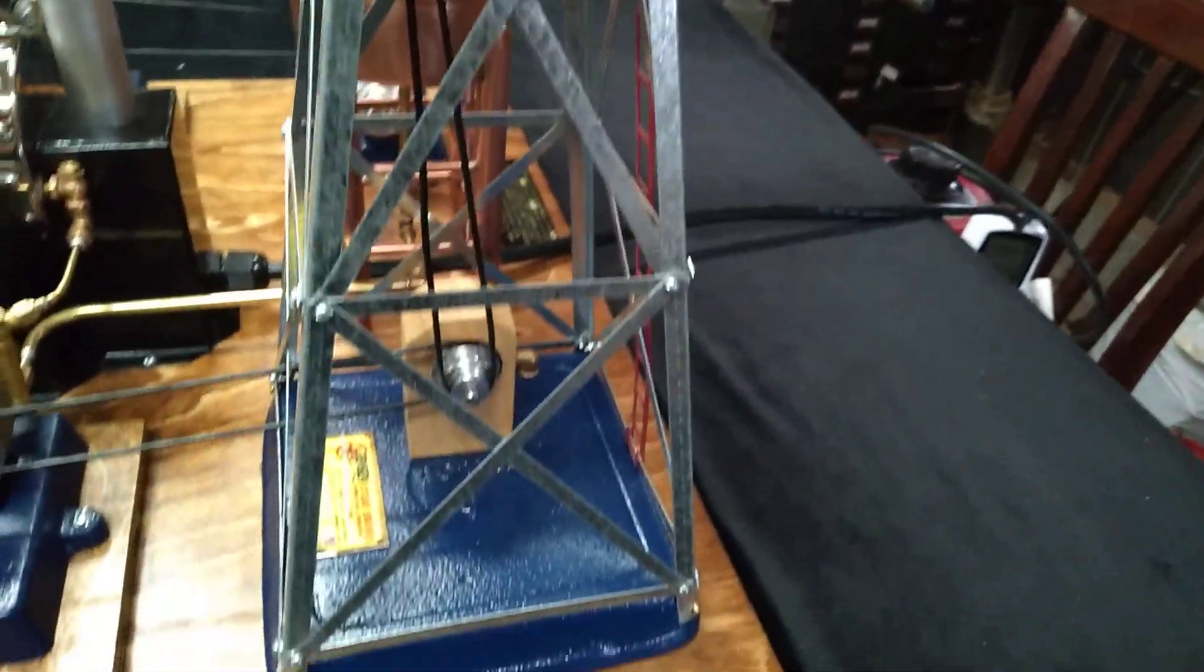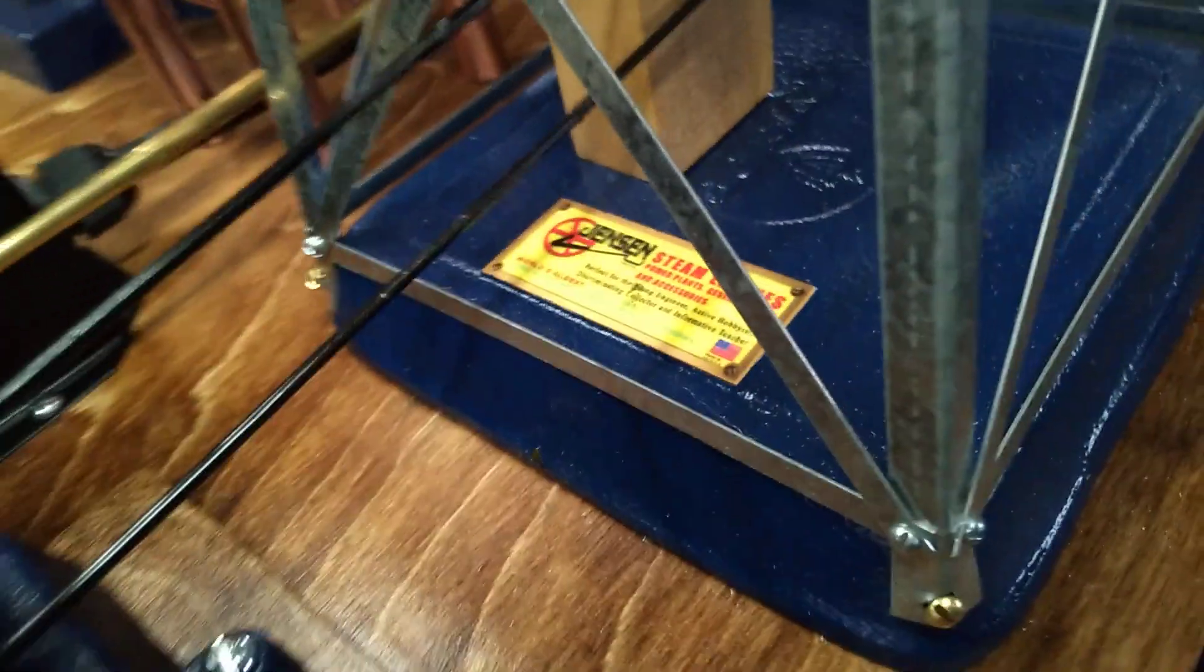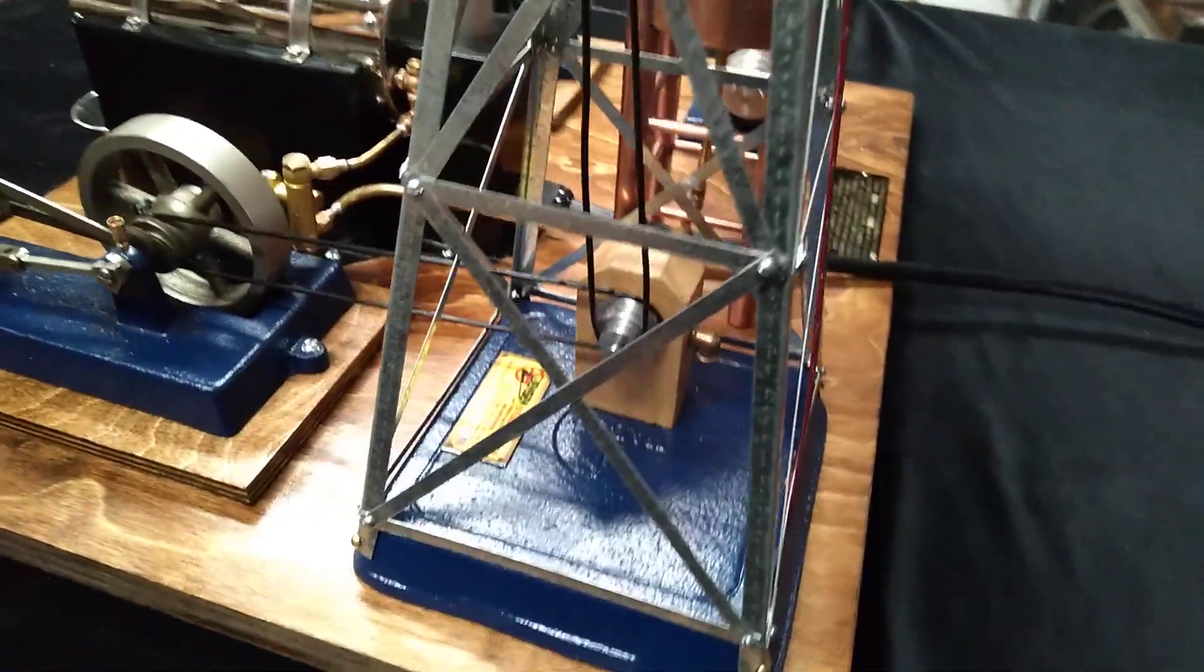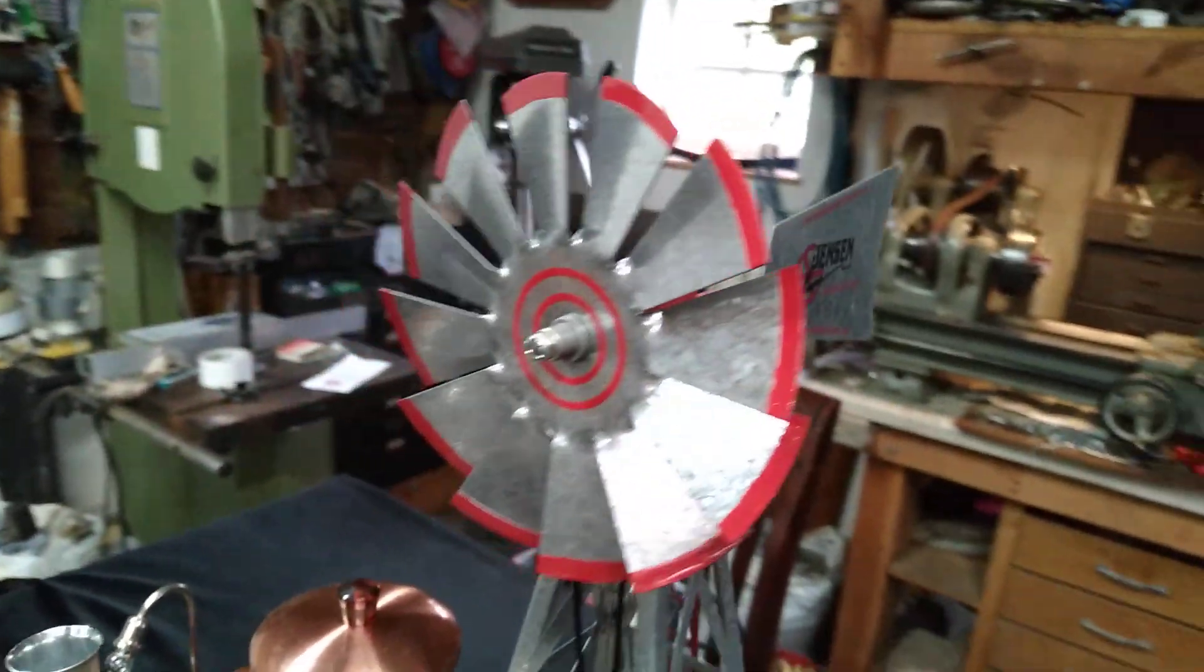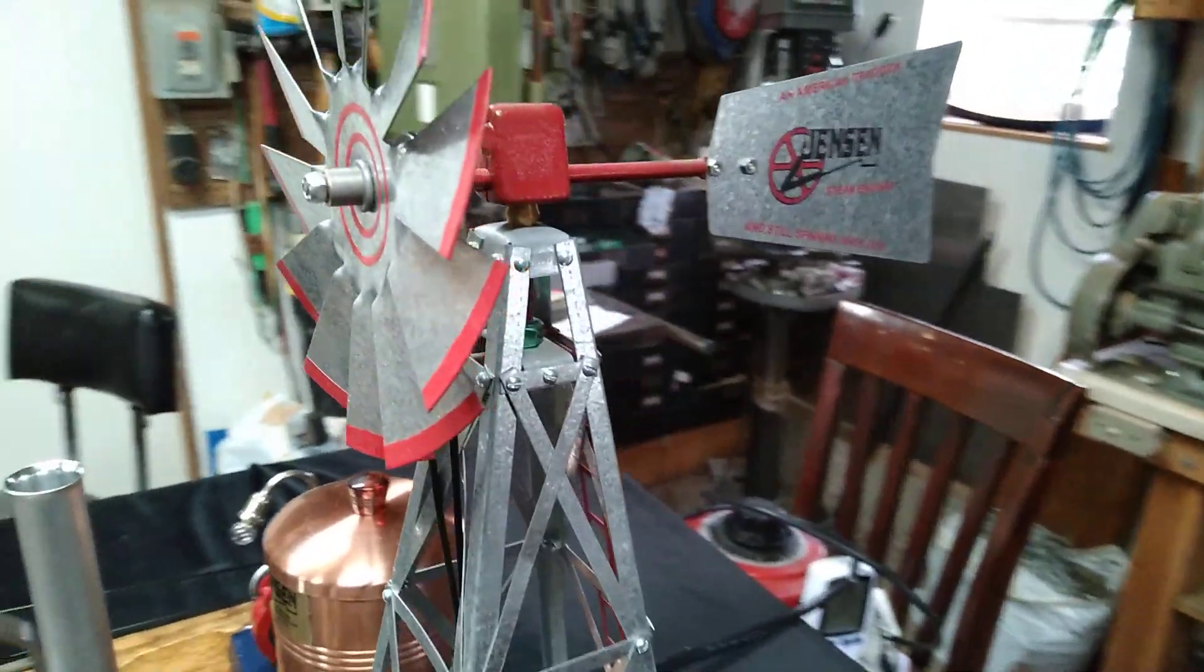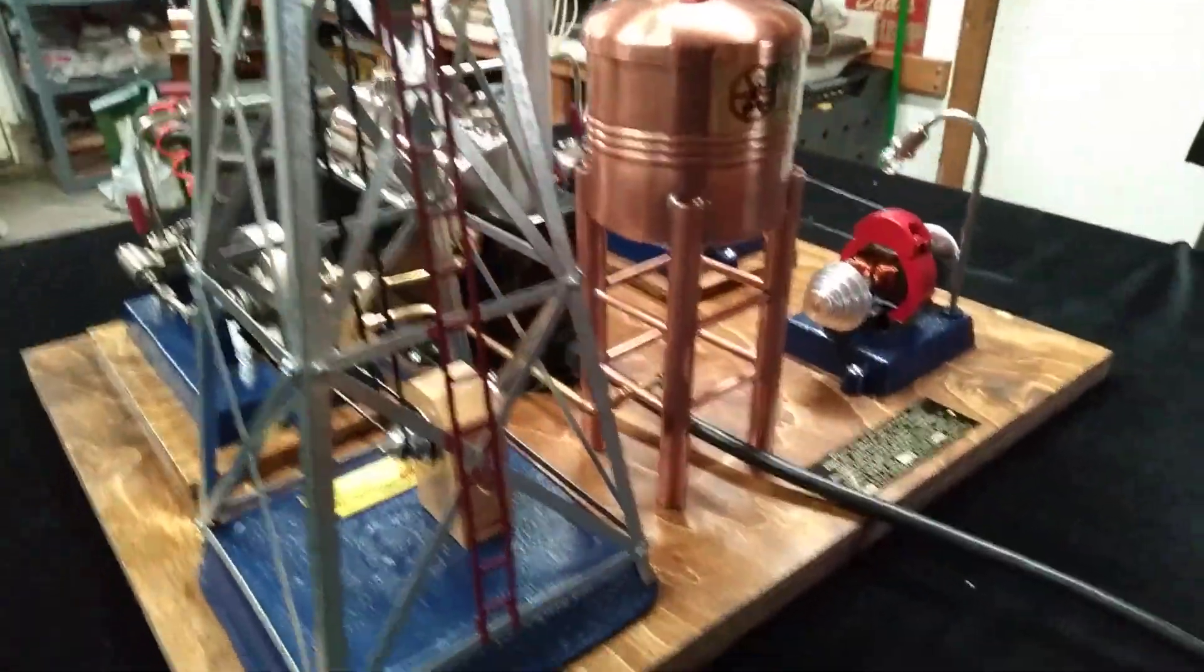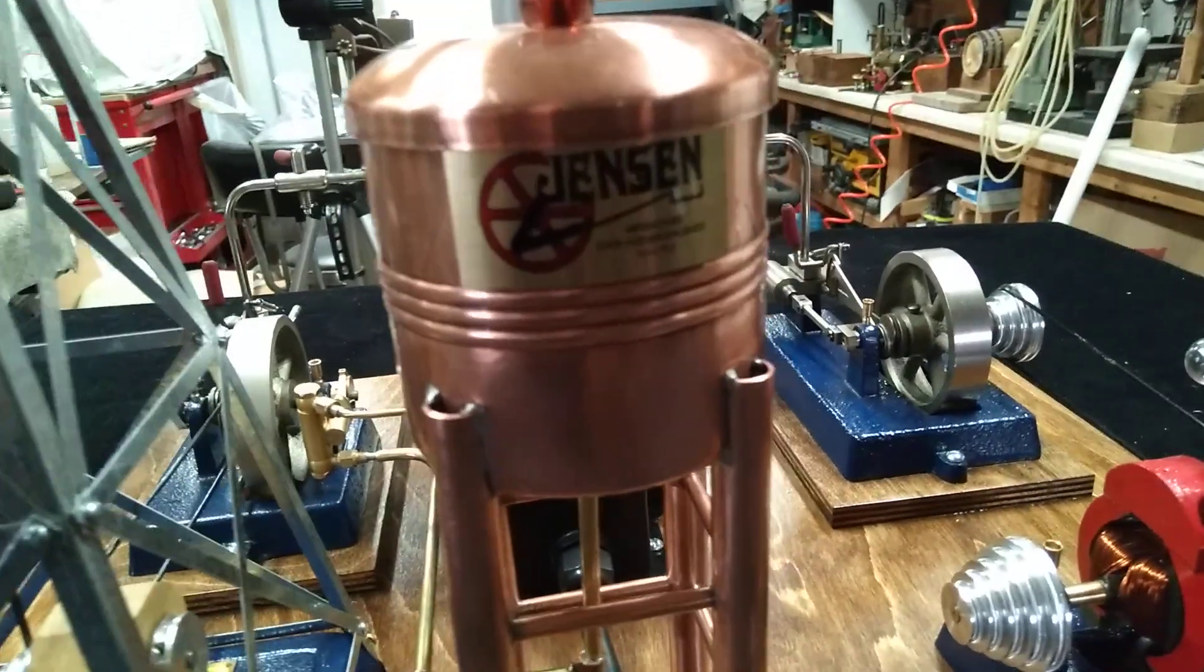And you can see we've got a cast iron base here. A Jensen steam accessory tag that they came out with at one time. And let's take a look around the back. We've got the fin tips on the blade painted red on the edges. Like I said, we have the logo there as well.